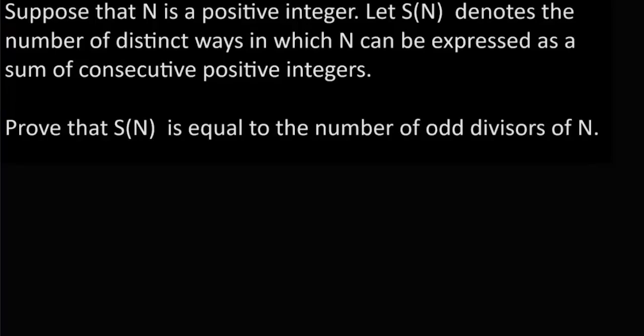There is this one lesser known result which is sometimes used in number theory as well as permutations and combinations. It says: if n is a positive integer and sn denotes the number of distinct ways in which n can be expressed as a sum of consecutive positive integers, then prove that sn is equal to the number of odd divisors of n.